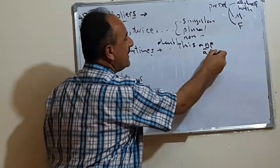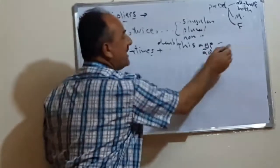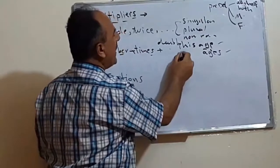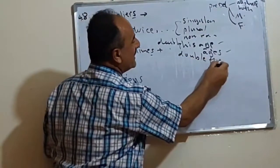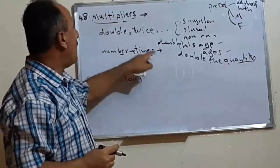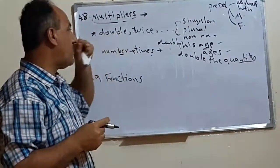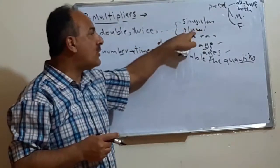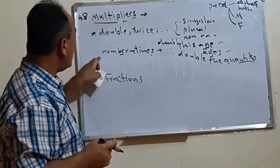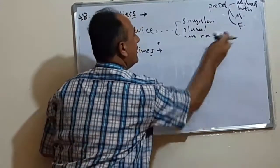For example, we can say 'double his age' — where age is singular. Or we can say 'twice their ages' — where ages is plural. And for non-count nouns, we can say 'double the quantity.' So the first group of multipliers — double and twice — can be followed by a singular noun, a plural noun, or a non-count noun.